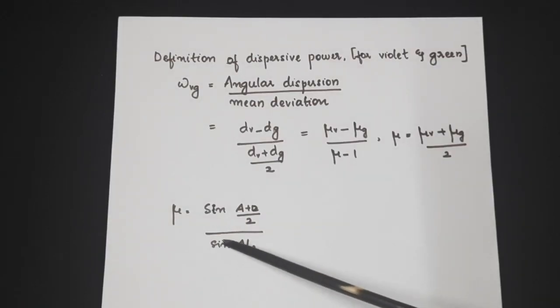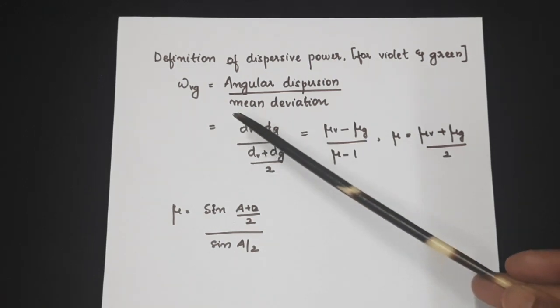Once the refractive index for various colors are calculated, we can move on to the dispersive power calculation.